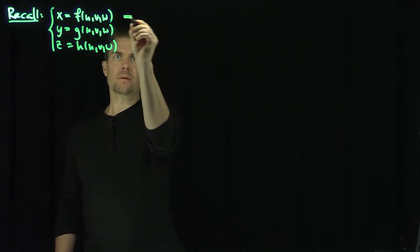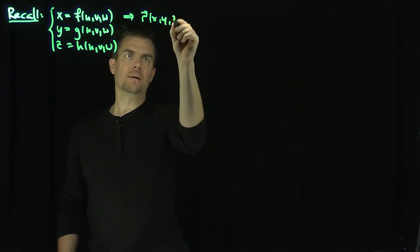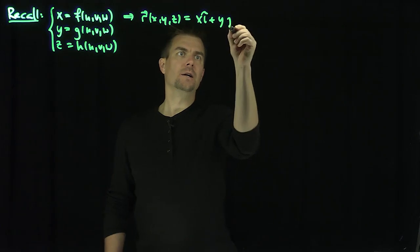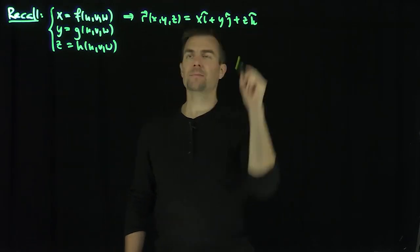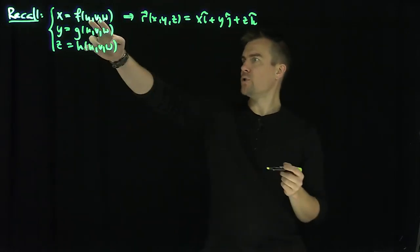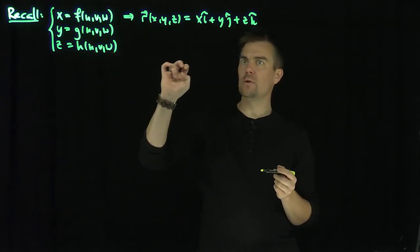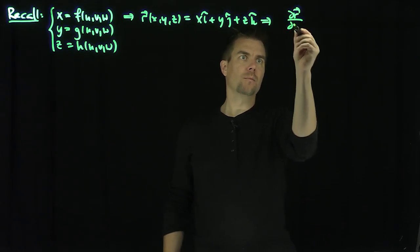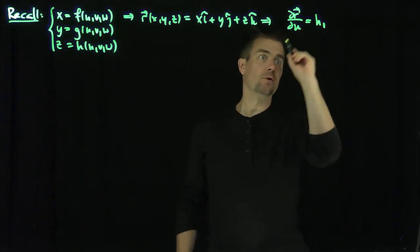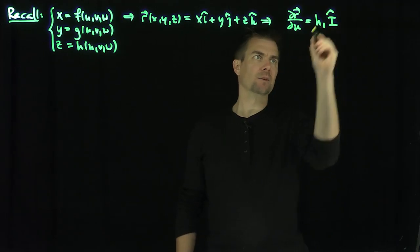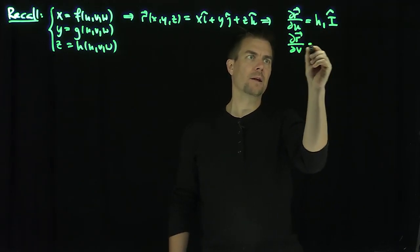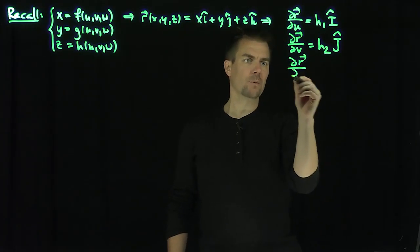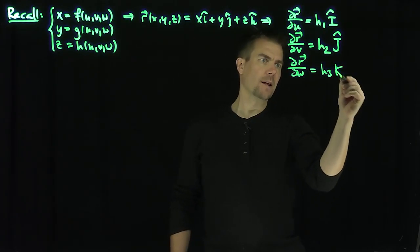Then we form the vector field position. Our setup is to form r of x, y, and z, which is r of u, v, and w as well, which is x i-hat plus y j-hat plus z k-hat. Since x, y, and z all depend on u, v, and w, we can form vectors: partial r partial u, which is going to be some number h1 times a unit vector i-hat. Partial r partial v is some number h2 times j-hat, and partial r partial w is h3 times k-hat.